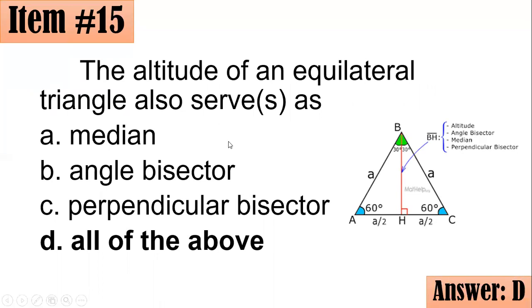It's an altitude, it serves as an altitude, angle bisector, median, and perpendicular bisector. As an altitude, this segment here is perpendicular with respect to the base. As an angle bisector, it divides angle ABC into two equal angles. As a median, it divides the opposite side here into two equal parts. So AH and CH are equal in terms of length. And perpendicular bisector has the characteristics of both median and altitude. So it is also a perpendicular bisector. So it's all of the above. Letter D.